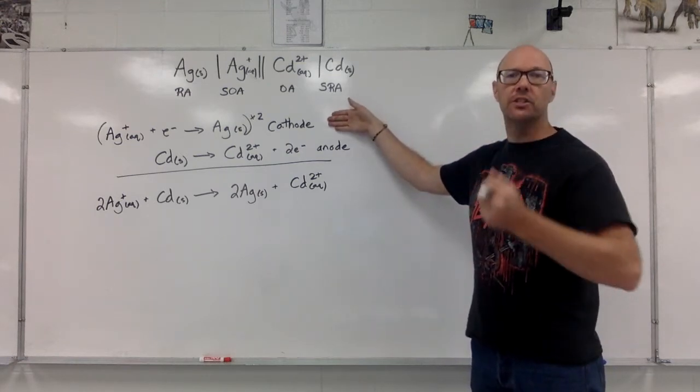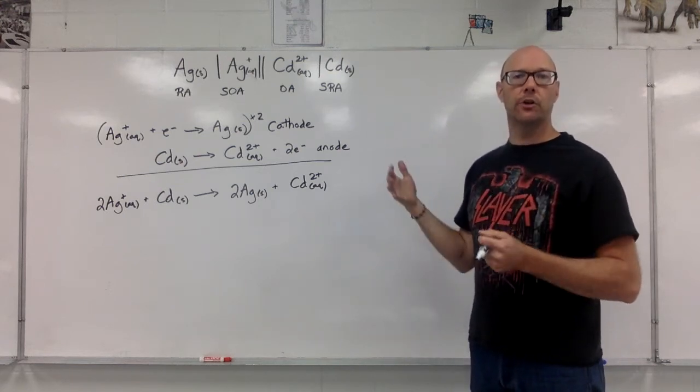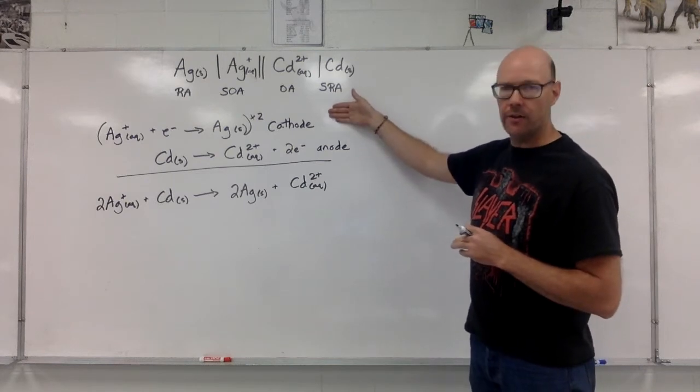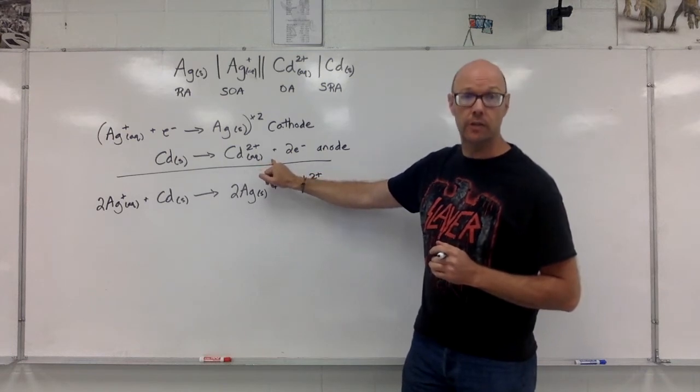Reminder that the cathode is the positive electrode, the anode is the negative electrode. Electrons are always going to flow from the anode to the cathode. If we look at it, here we have a gain of electrons. Here we have loss of electrons.